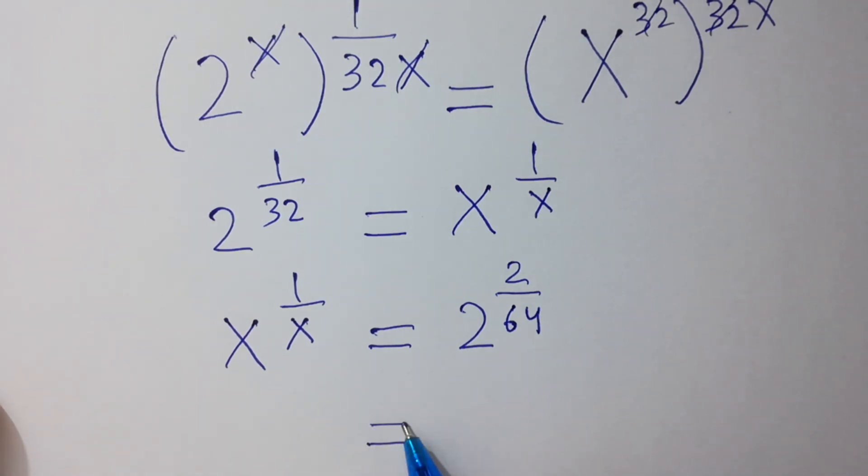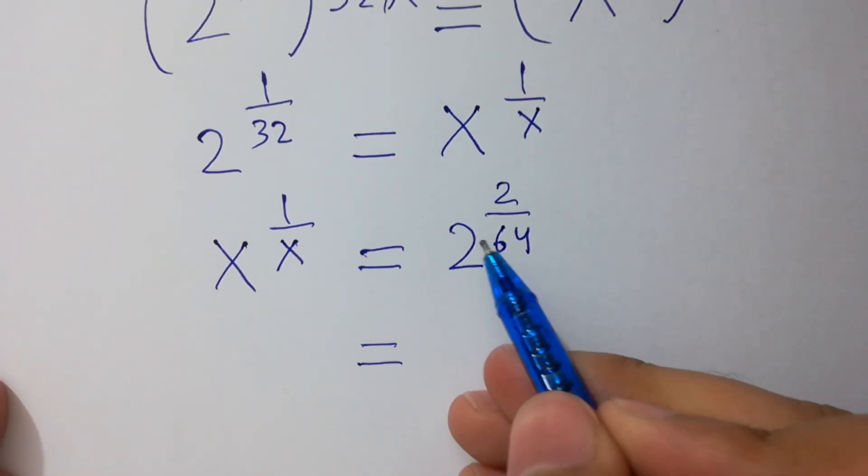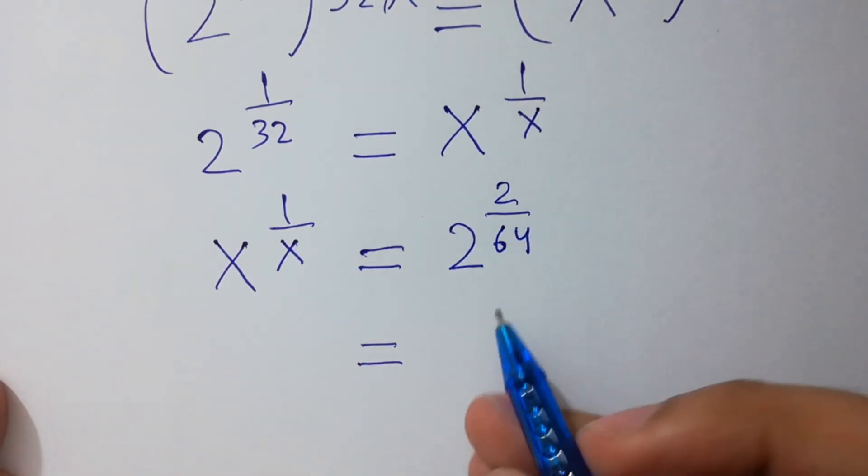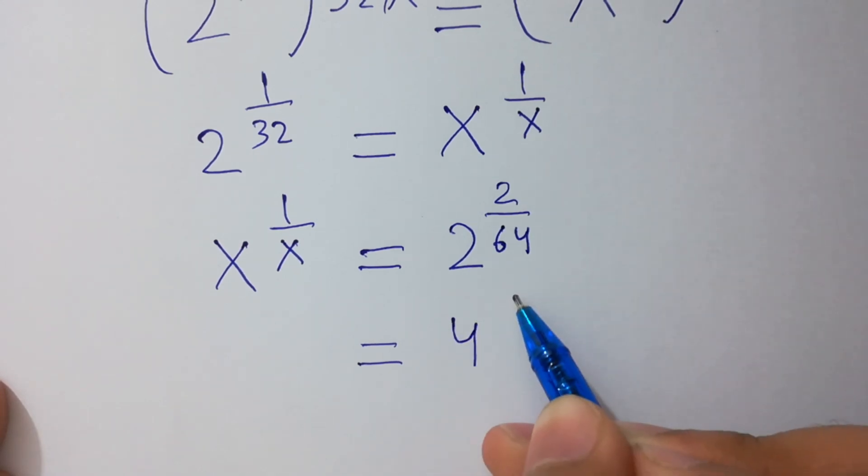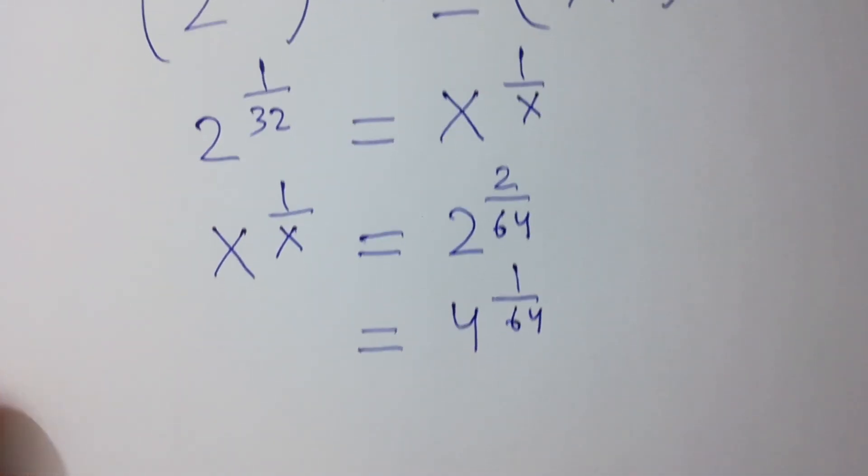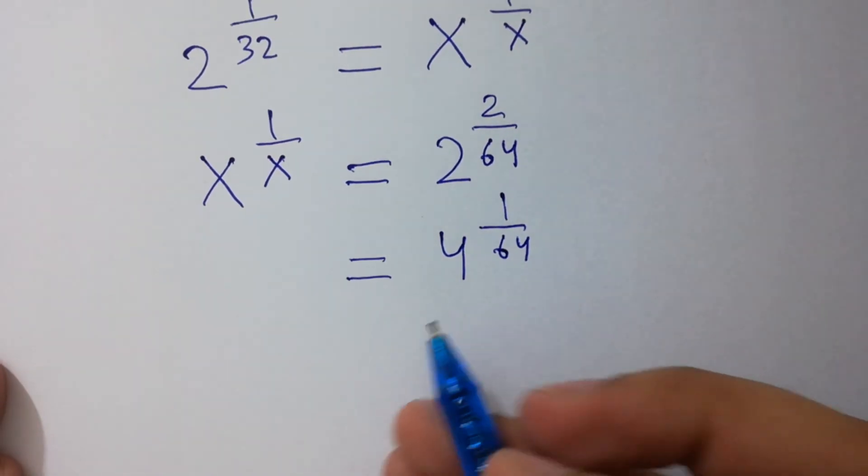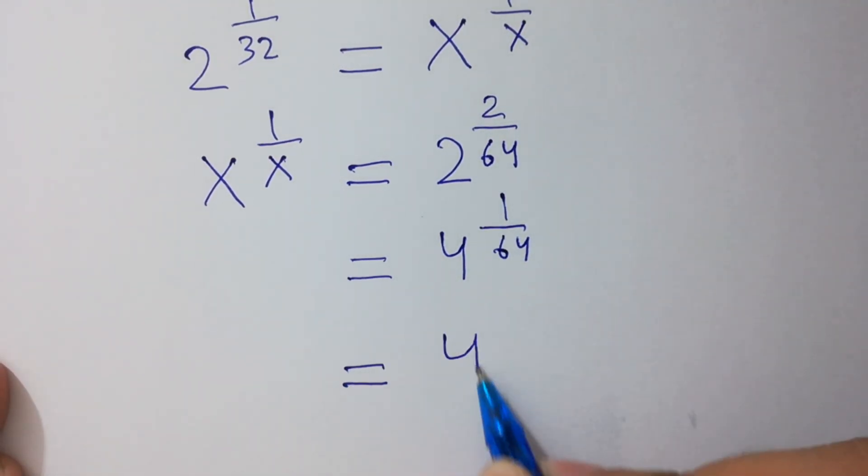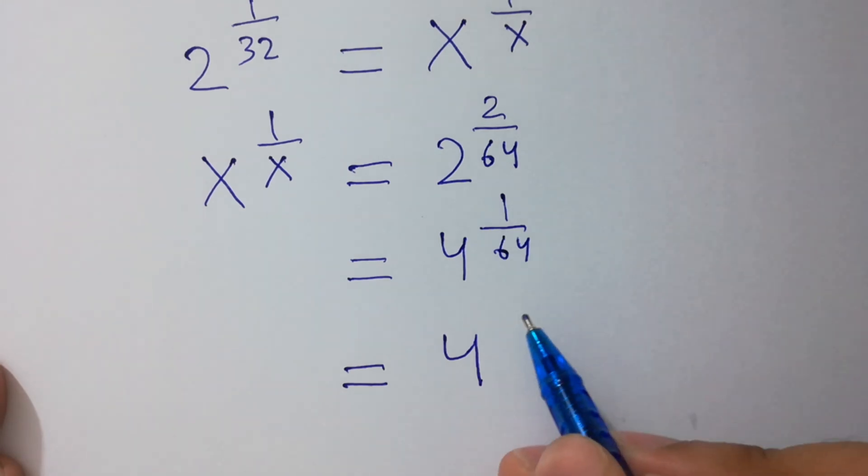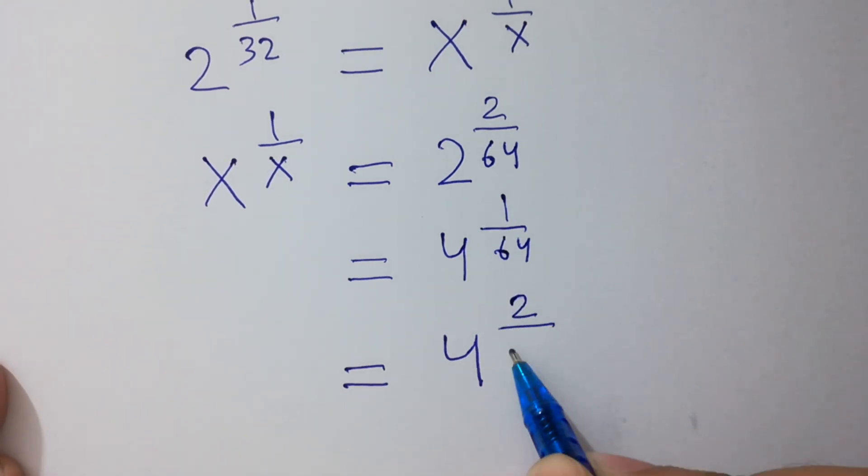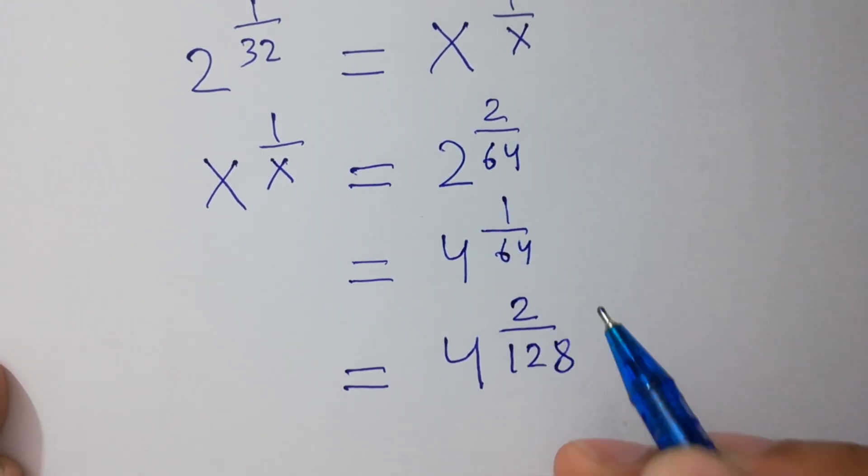Here, 2 squared equals 4 to the power 1 over 64, and 1 over 64 can be written as 2 over 128.